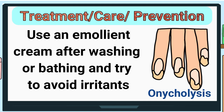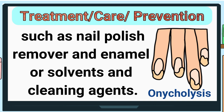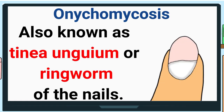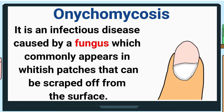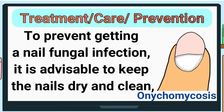Use an emollient cream after washing or bathing, and try to avoid irritants such as nail polish remover, enamel, solvents, and cleaning agents. Onychomycosis is an infectious disease caused by a fungus, which commonly appears as whitish patches that can be scraped off from the surface. Treatment: To prevent a nail fungal infection, keep the nails dry and clean and use an antifungal foot spray or powder.